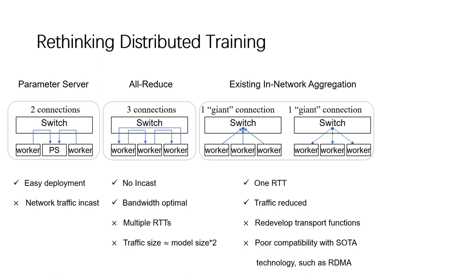Recently, a class of in-network aggregation solutions has emerged as a significant area of interest. This approach offloads the gradient aggregation onto programmable switches, which accelerates the network transmission and frees network bandwidth. However, in most existing solutions, the designers have to reimplement the basic transport layer functions in the application layer, because they need a customized INA stack to co-design the host and switch logic.